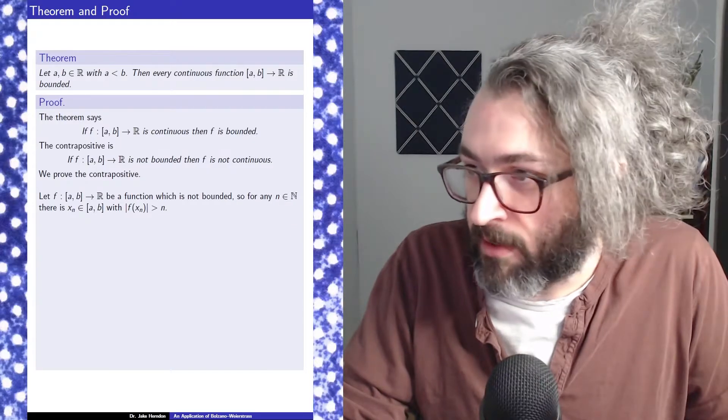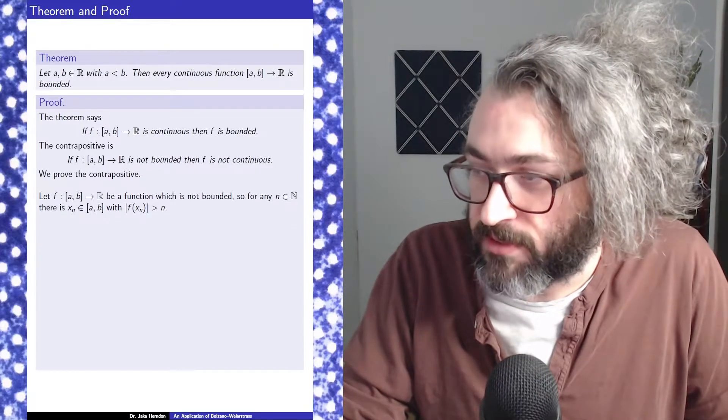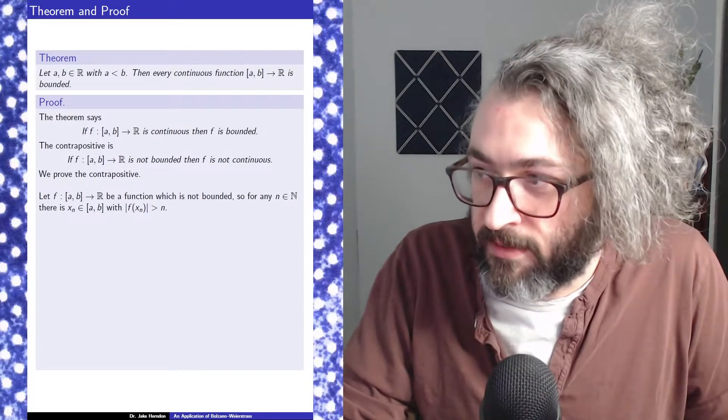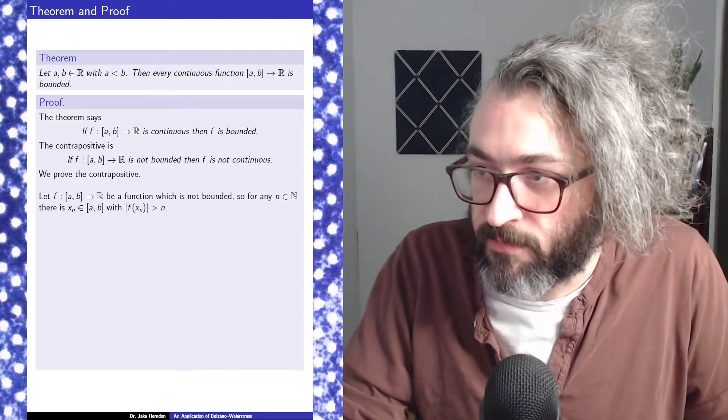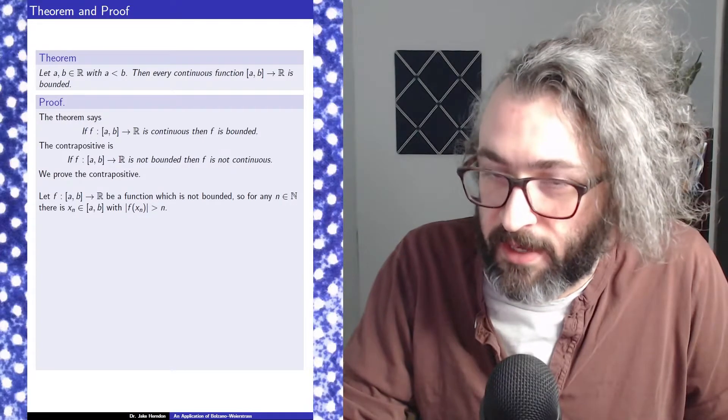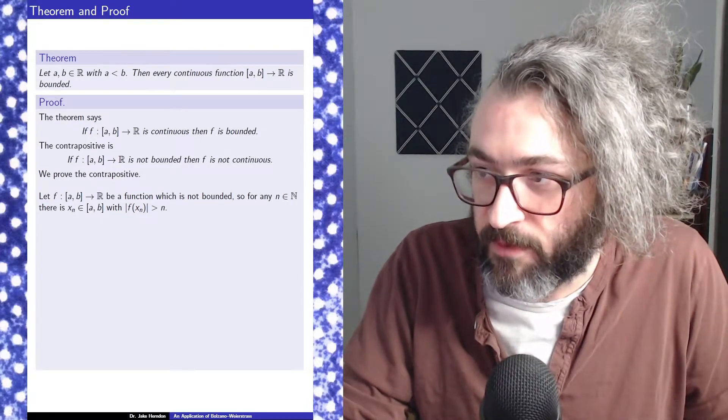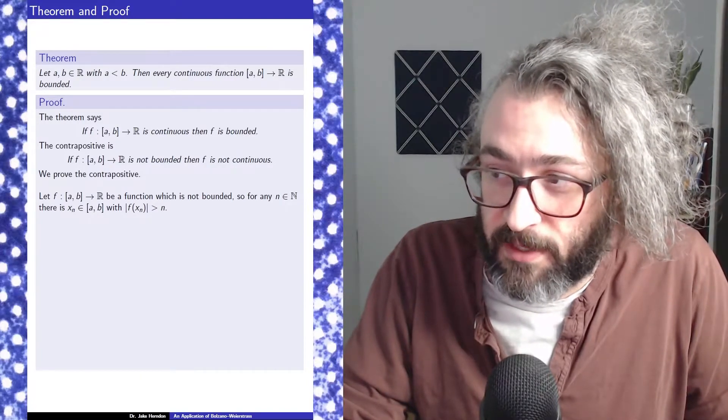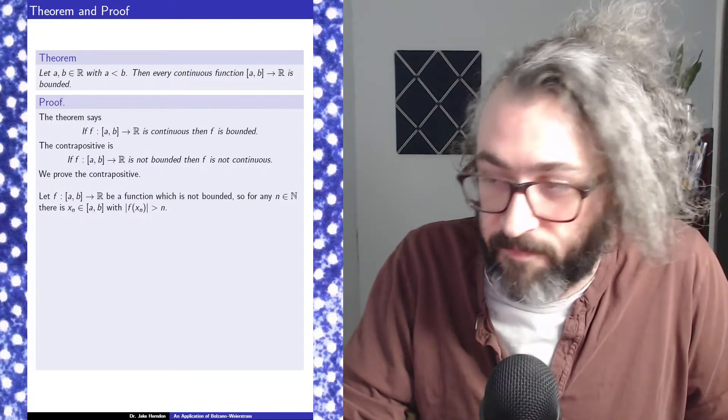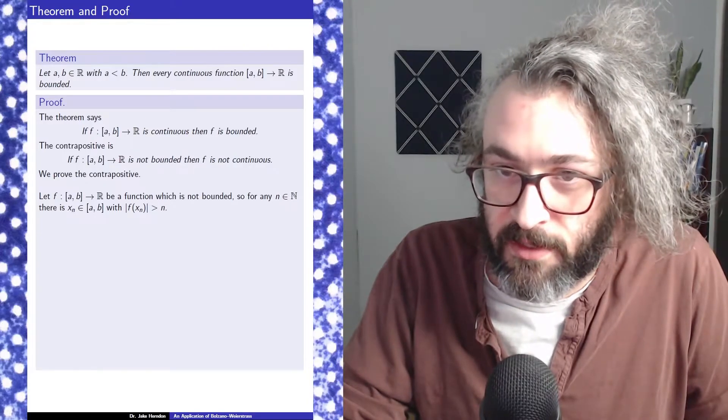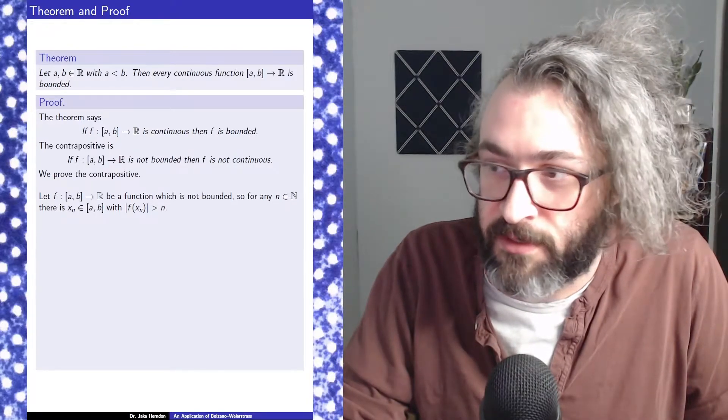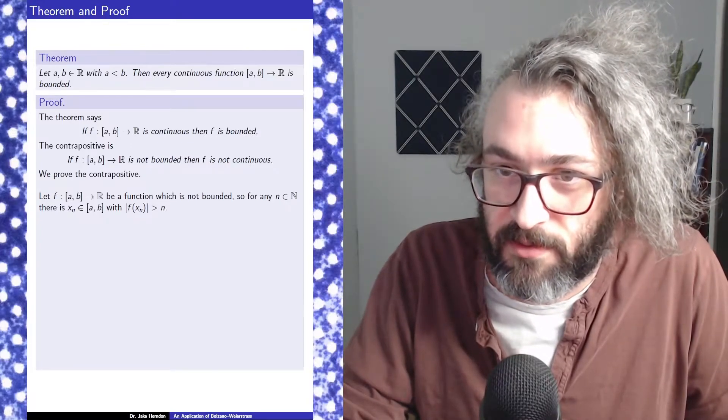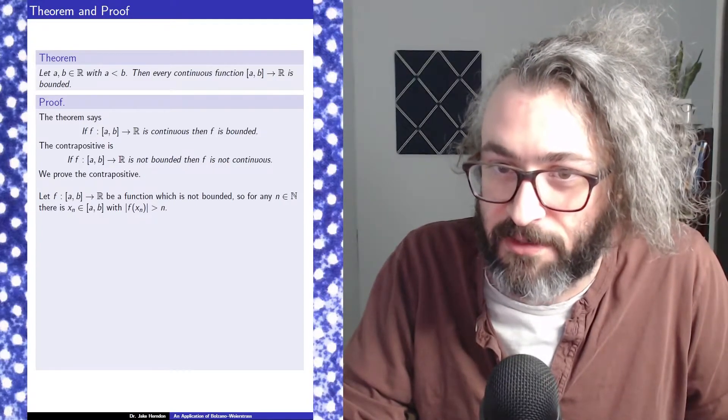So to start that off, let f be a function which is not bounded. So what does that mean? For any n in the natural numbers, there is some x_n in the domain of f with the absolute value of f(x_n) greater than n. So this is just saying if you want to find a point in the range of f that's really big, you can always do that no matter how big you want to find that point.